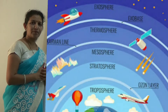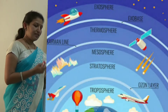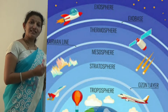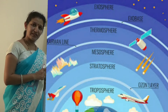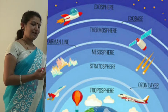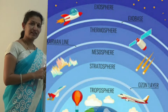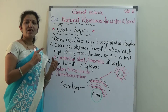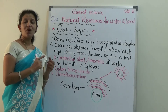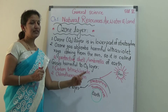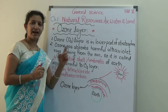Also, very important factors like clouds, rain, fog, mist, and snow — all these are formed in the layer of the atmosphere.